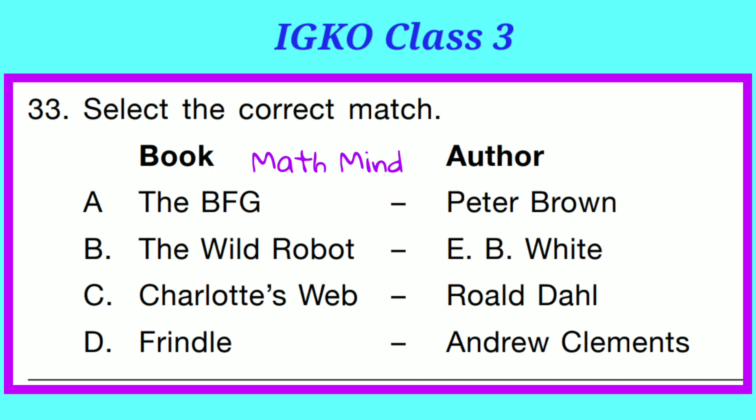Question No. 33. Select the correct option for Book and Author. Option D is correct — the book 'Frindle' was written by Andrew Clements.